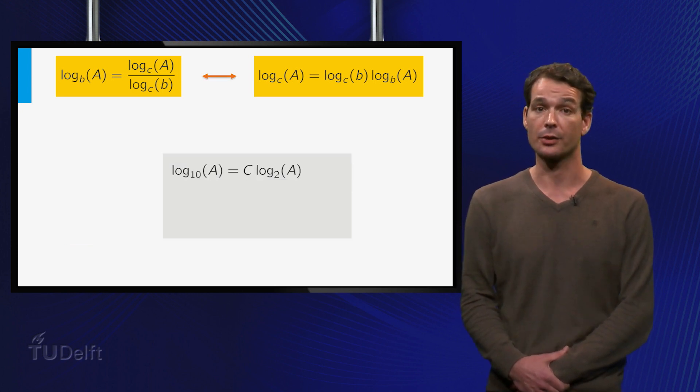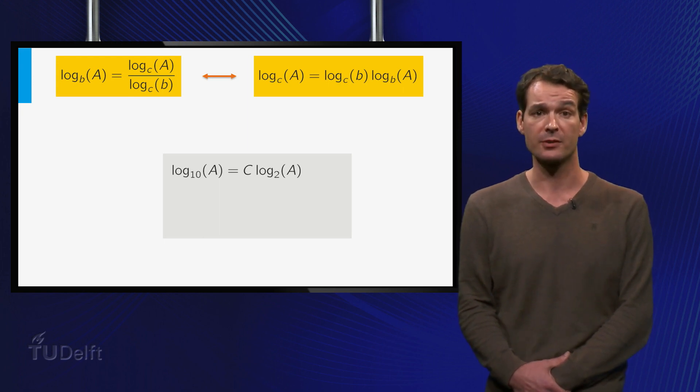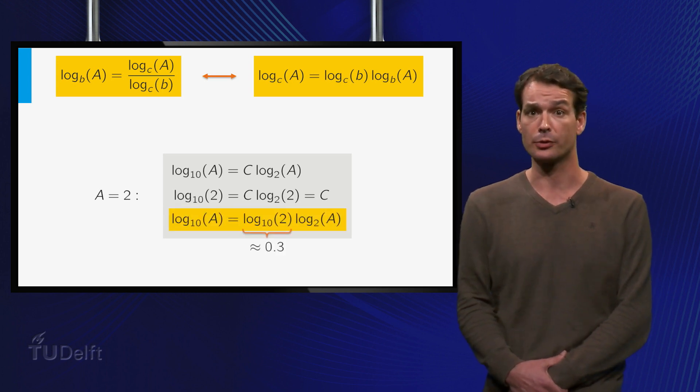We can actually calculate the constant factor. If log base 10 of A equals c times log base 2 of A, then taking A equal to 2 gives c is equal to log base 10 of 2. So the factor 0.3 in our example is actually log base 10 of 2.